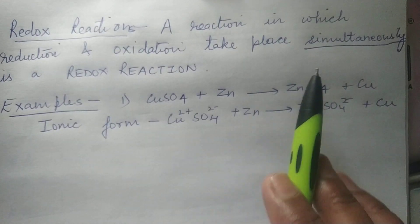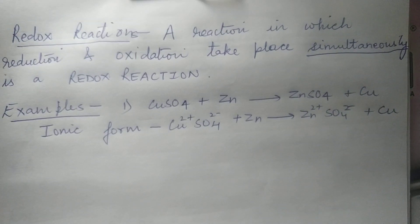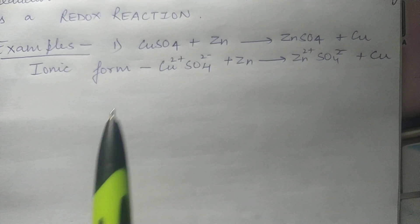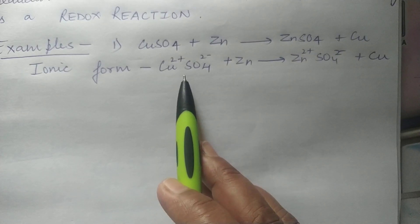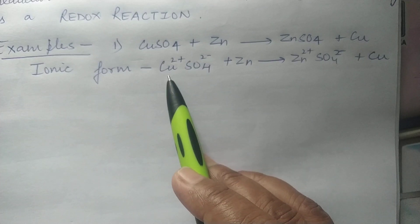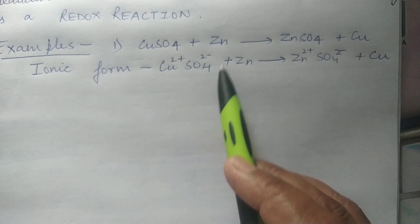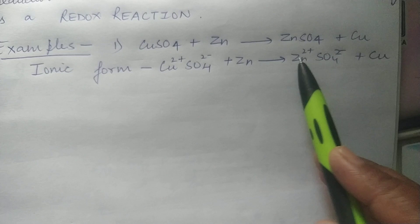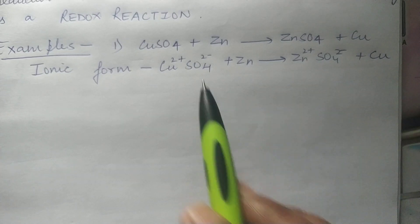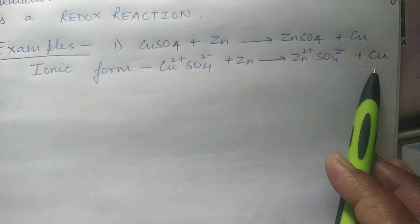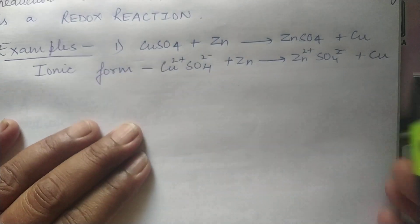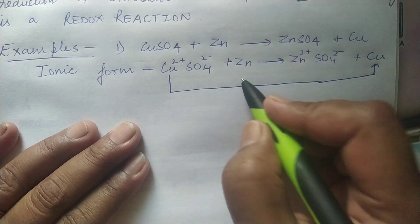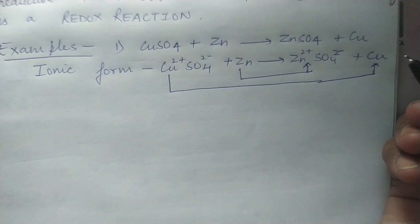The first example is the reaction between copper sulfate and zinc to give zinc sulfate and copper. If we write this reaction in ionic form, in which the ions involved in the reaction are shown, copper sulfate means Cu²⁺ and SO₄²⁻ ions. These react with zinc to form Zn²⁺ and SO₄²⁻ ions as zinc sulfate and copper. So we have written this reaction in ionic form.